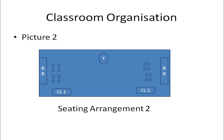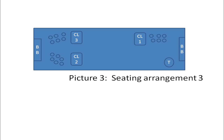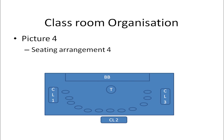Picture 2 shows another seating arrangement where two blackboards serve two different grades, with students of each class sitting facing their own blackboard. Picture 3 is a similar arrangement that accommodates three different classes.